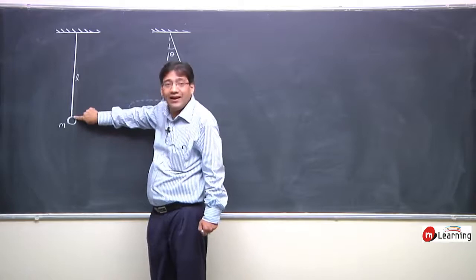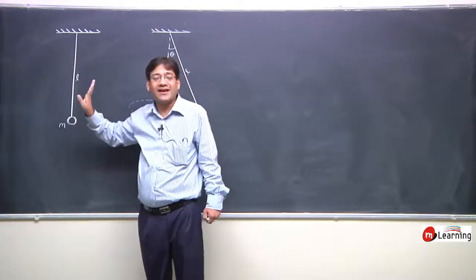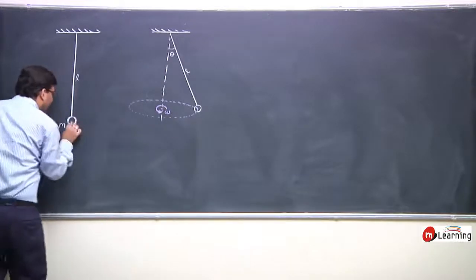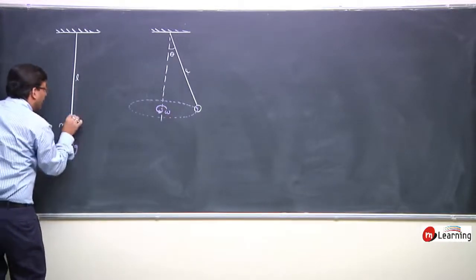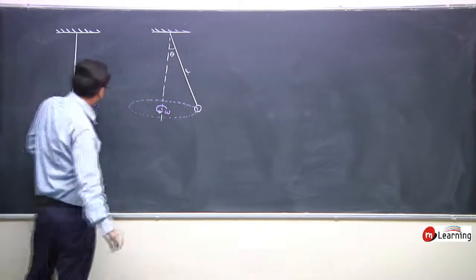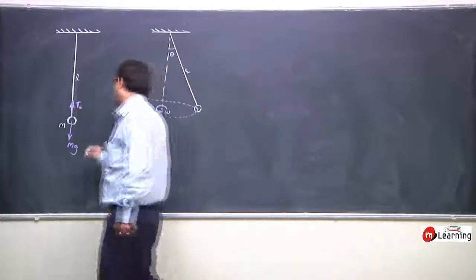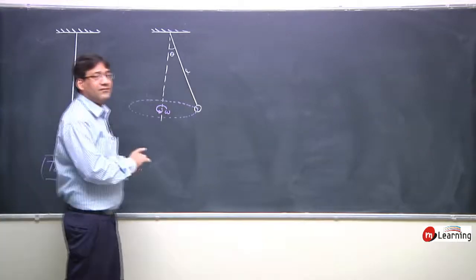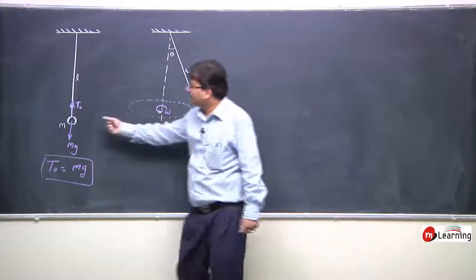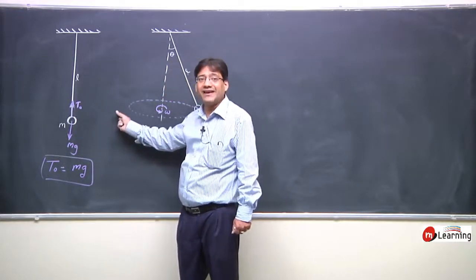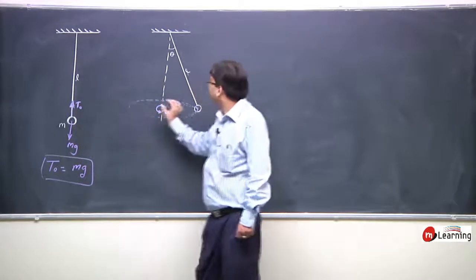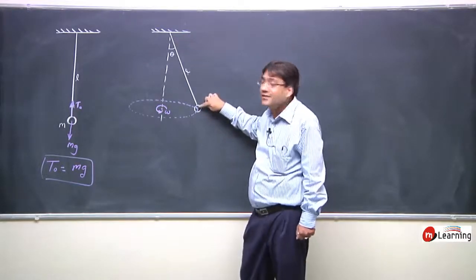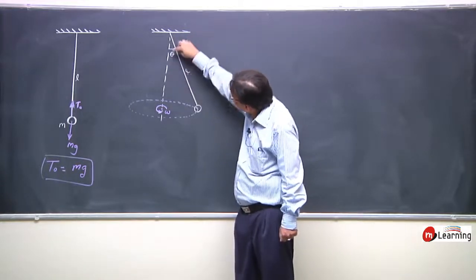This is a thread of length L with a mass at its other end. If the situation is stationary, mass mg equals tension T₀, so T₀ = mg. When the bob is displaced sideways, the thread makes an angle theta with the vertical, and the radius of the circular path is R.